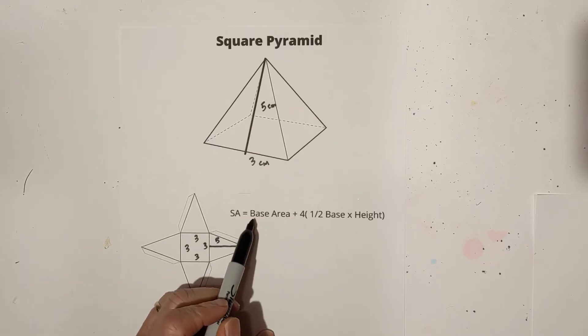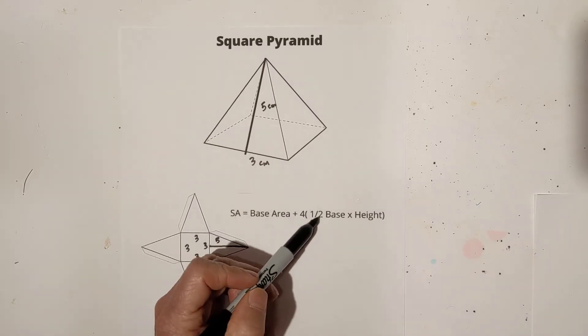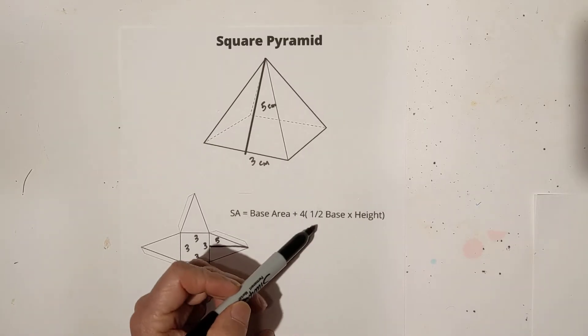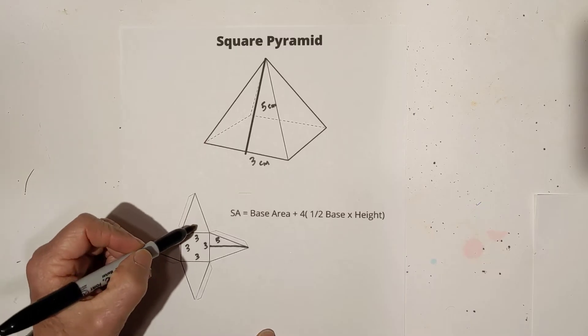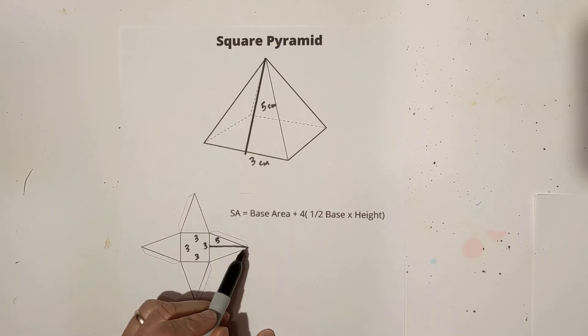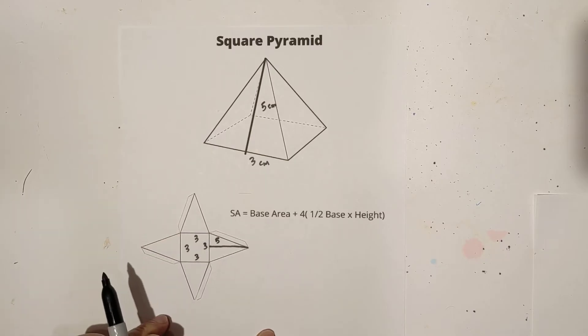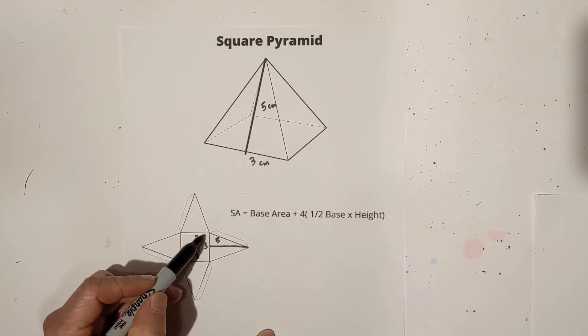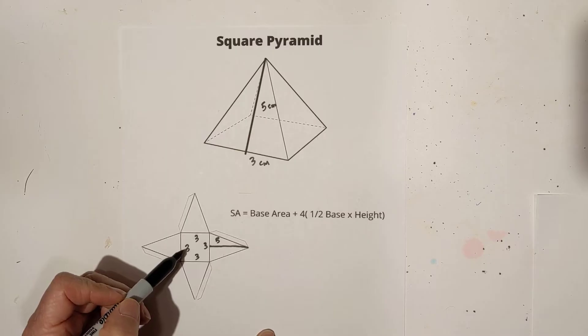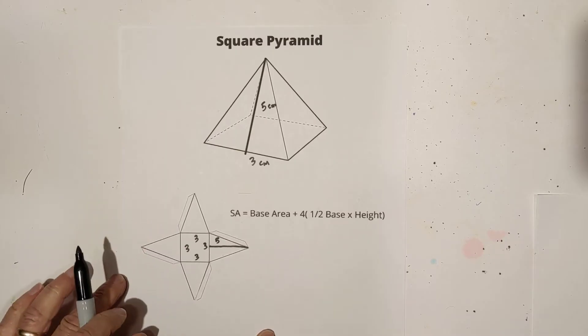This first way is you use the base area plus four times one half base times height. The reason why you use one half base times height is because that's the area of a triangle. Remember you have height, you have base, and then base area, it is like a rectangle and that will be length times width.